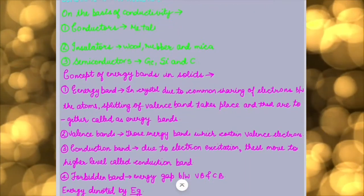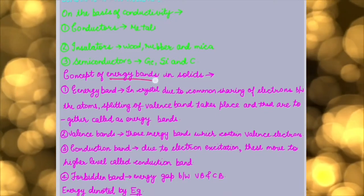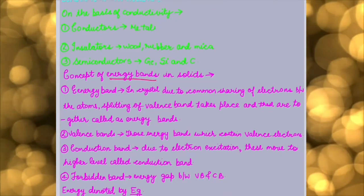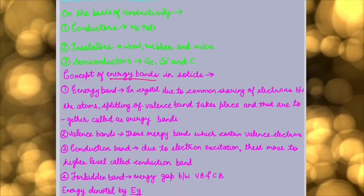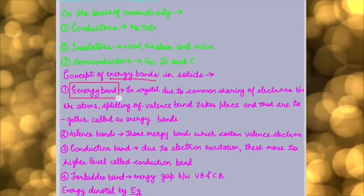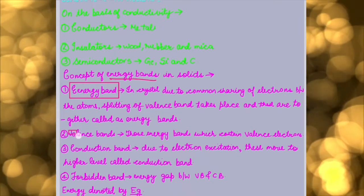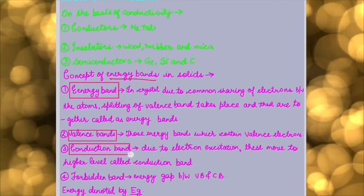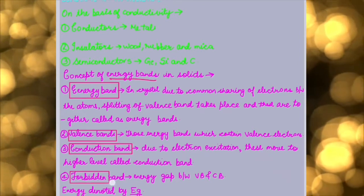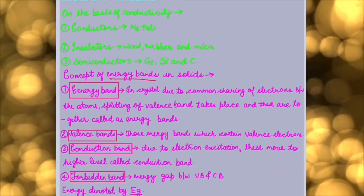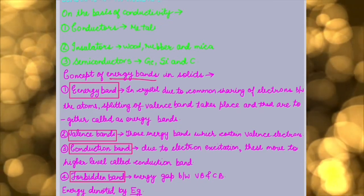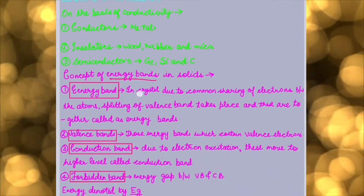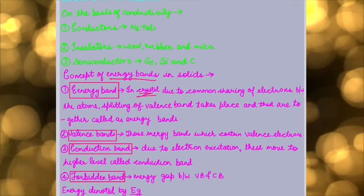Now let us talk about another important concept, that is the concept of energy bands in solids. So there are four types of energy bands we have to discuss. First we will talk about energy band, second we will talk about valence band, third we will talk about conduction band, and fourth we will talk about forbidden band. So first of all, let us introduce ourselves to energy band. We know that in a metal crystal, because all the atoms are tightly packed, we have common sharing of electrons.